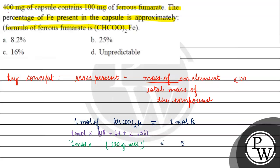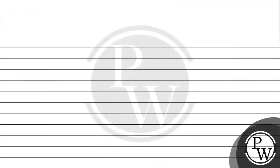Isme hai hamare paas 56 gram of iron rahega. Yani 170 gram of iron fumarate mein hamare paas basically present hoga 56 gram of iron.